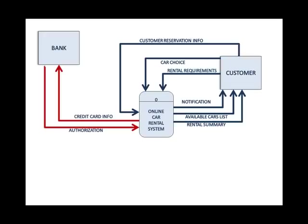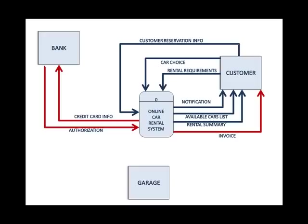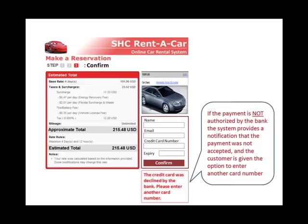The authorization can mean either yes or no — it can be an approved authorization or a rejected one. If it's approved, the customer would receive an invoice — confirmation of how much was taken. Then the system needs to make sure the car cannot be rented by somebody else, since the customer's money has already been taken. So the system would send a rental notification to the garage saying to reserve this car from that date to that date, making it unavailable for everybody else so the customer can pick it up.